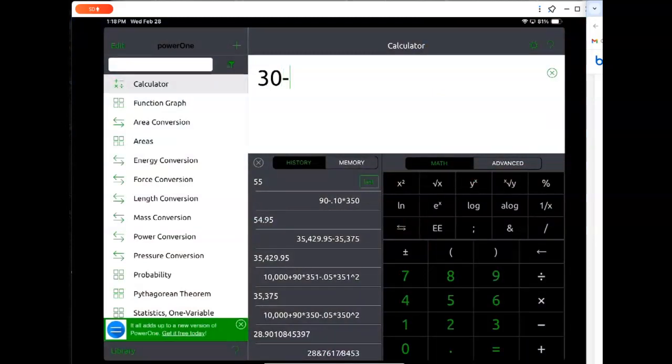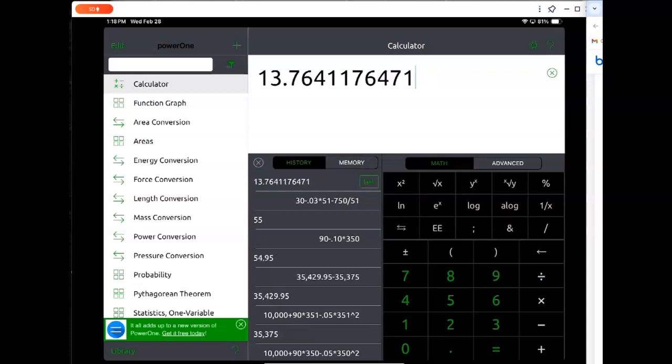And let's actually go ahead and do that. 30 minus 0.03 times 51 minus 750 divided by 51. And we go in there and get 13.764 and so on.